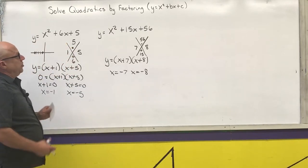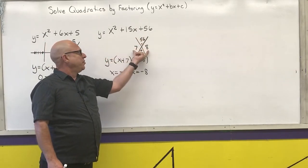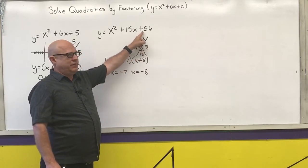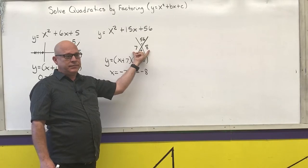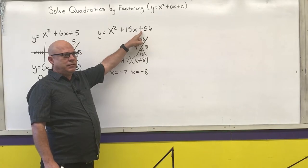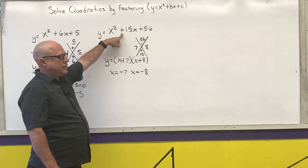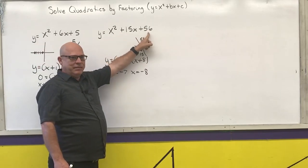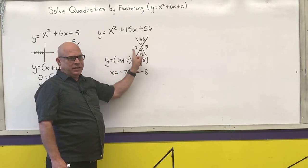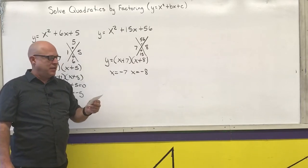Here's an important sign rule: if the last term is positive, both numbers must have the same sign; if the last term is negative, they must have opposite signs. When both signs are the same, they match the sign of the middle term. When the signs are opposite, the sign of the middle term matches the sign of whichever number has the largest absolute value. The next three examples illustrate these various sign combinations.